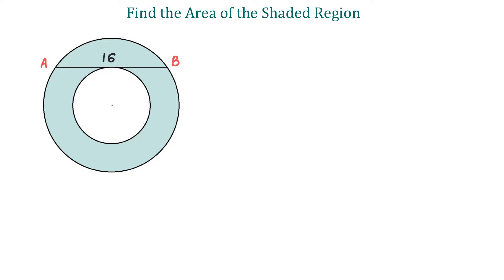In general, to find the area of the shaded region, we need to find the area of the larger circle and subtract the area of the smaller circle. Let the radius of the larger circle be uppercase R and let the radius of the smaller circle be lowercase r.